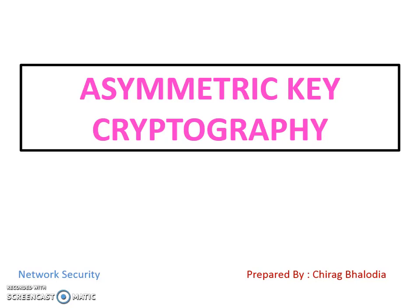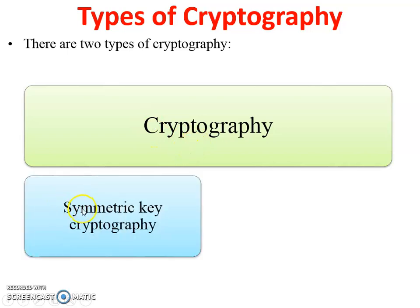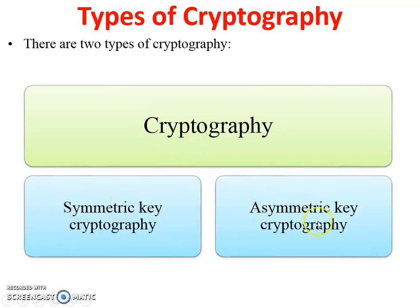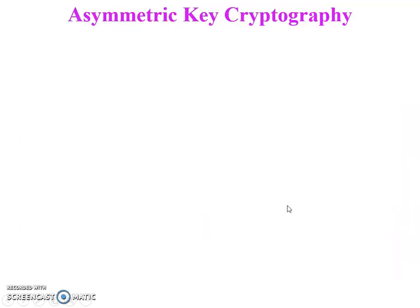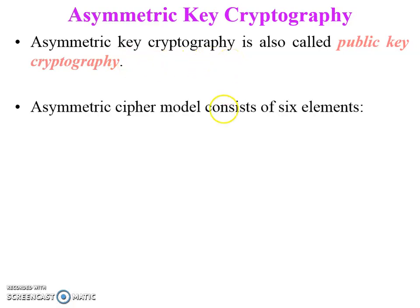Hello friends, myself Chirak. Today I am going to discuss with you Asymmetric Key Cryptography, a topic of network security. There are basically two types of cryptography: one is symmetric key cryptography and the second is asymmetric key cryptography. Asymmetric key cryptography is also called public key cryptography, and symmetric key cryptography is called secret key cryptography.